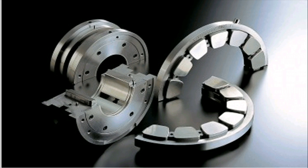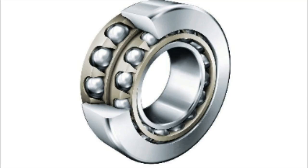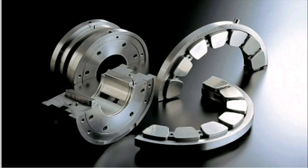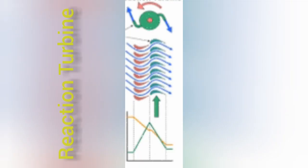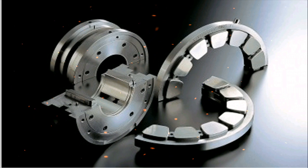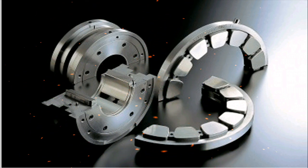A small thrust bearing such as a ball bearing is used for small turbines, and radial babbitt facing on journal bearings are commonly used in small and medium sized turbines. Tilting pad type thrust bearings are used in large steam turbines. In the case of reaction turbines, the pressure drop across the moving blades creates a heavy axial thrust force in the direction of steam flow through the turbine. Due to this greater thrust force, heavy duty thrust bearings such as tilting pad type are used.